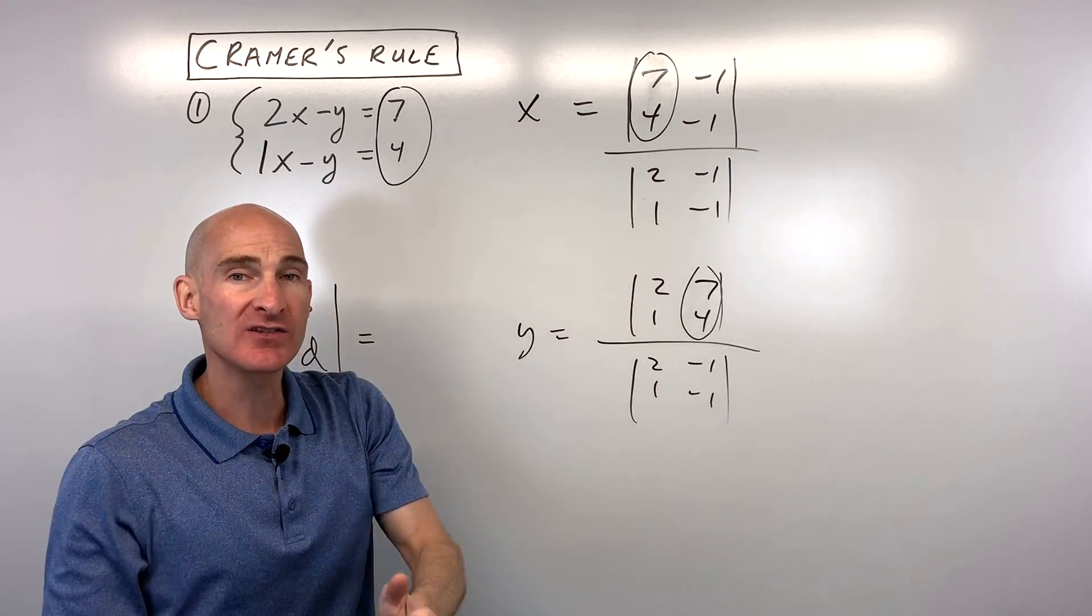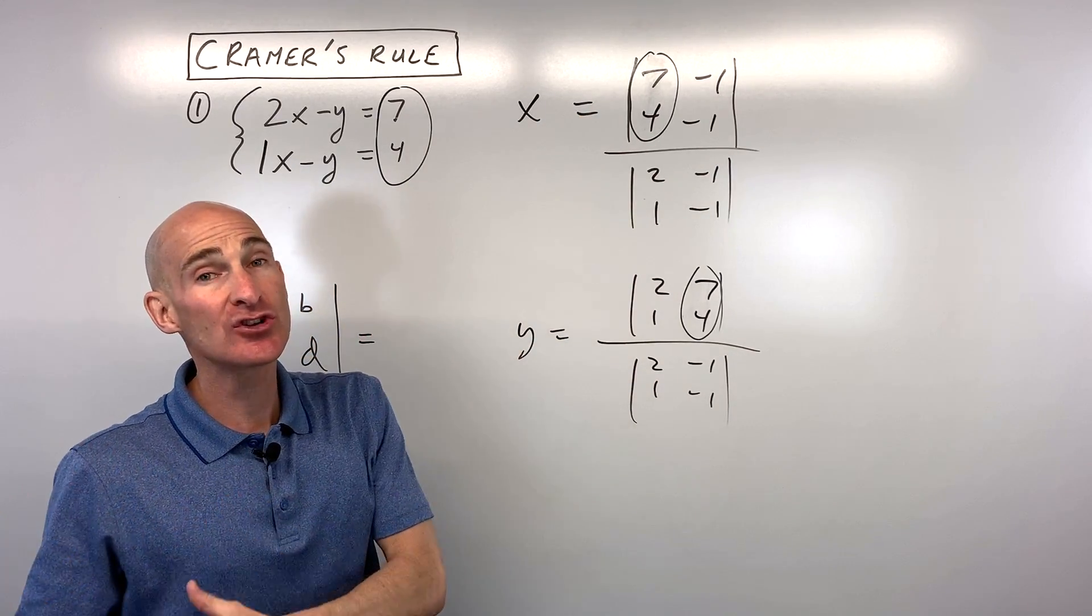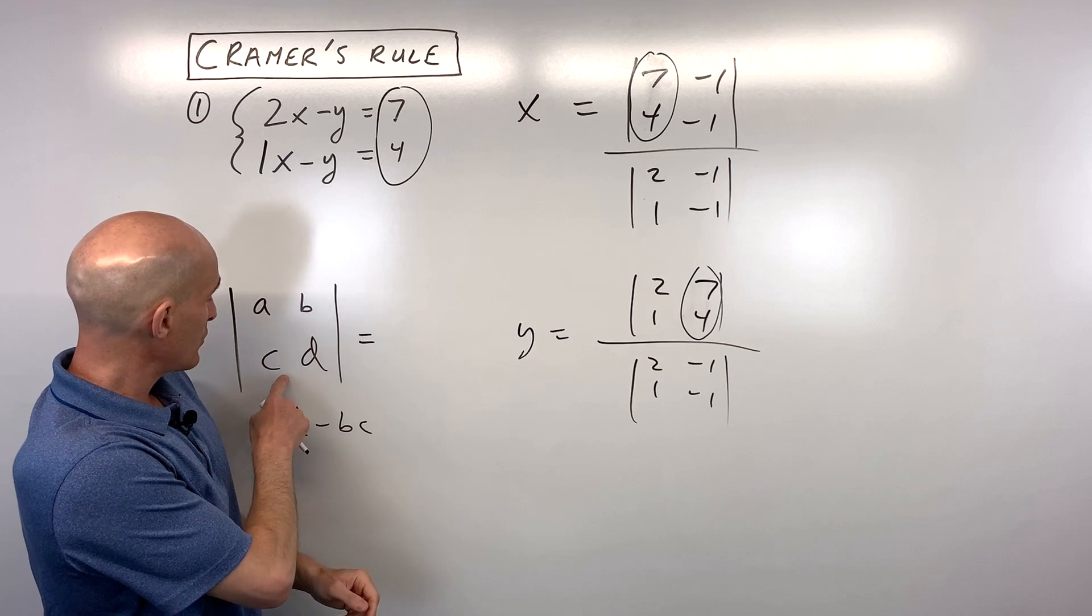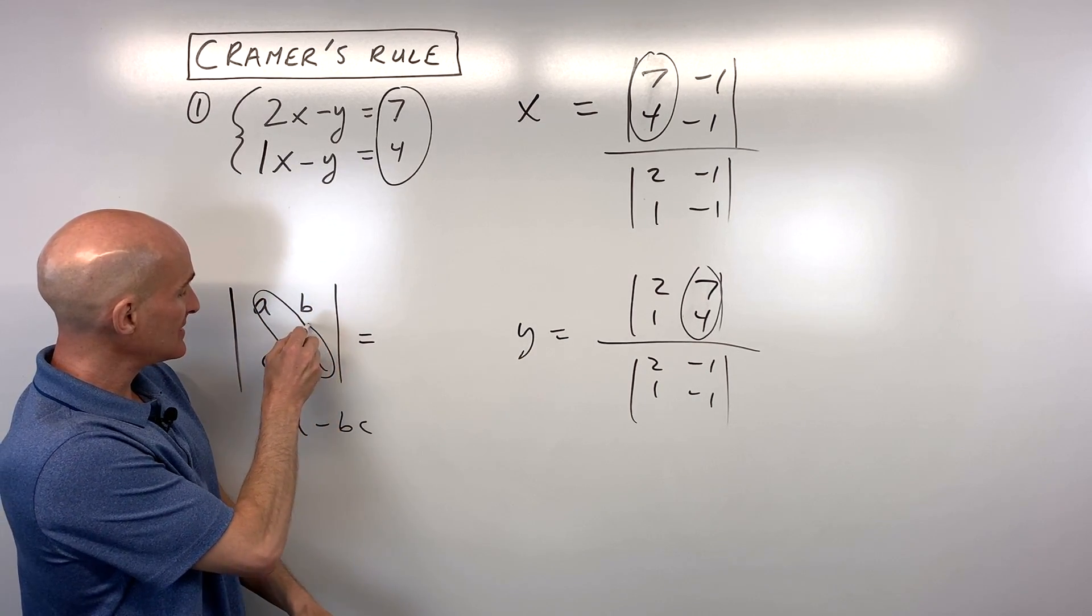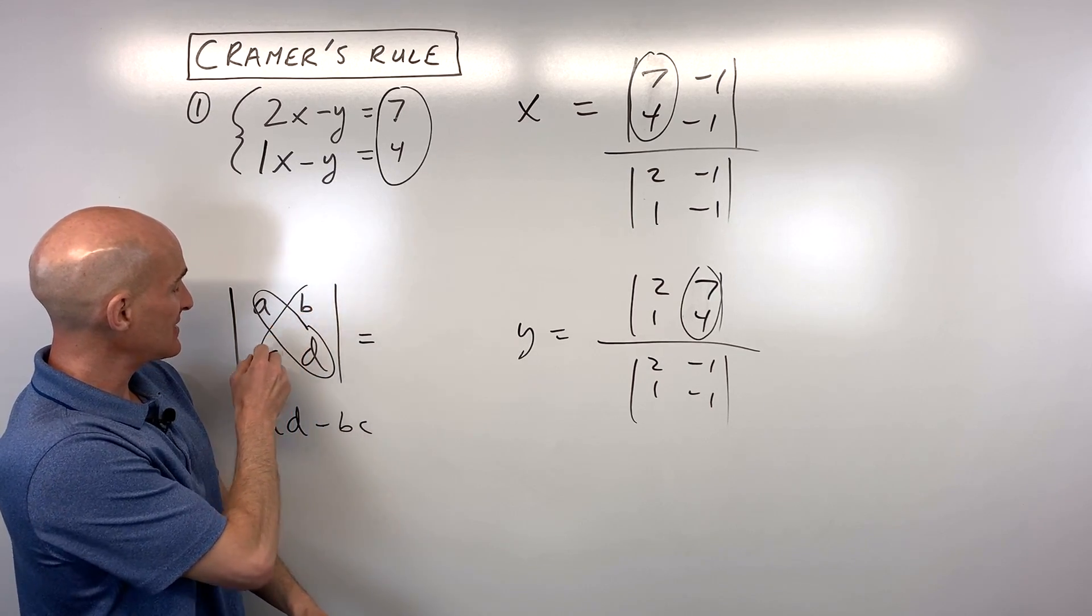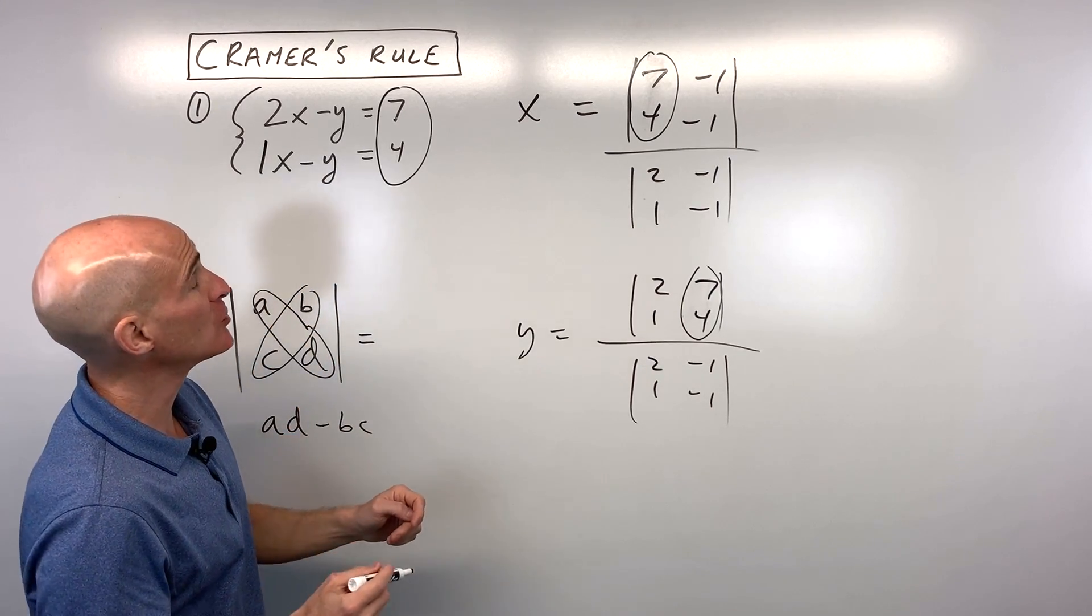Now you see these vertical bars. That means to take the determinant of the matrix. Just a refresher, the determinant of a matrix is going to be this diagonal, A times D, minus this diagonal, B times C.